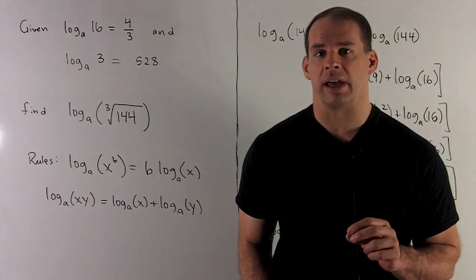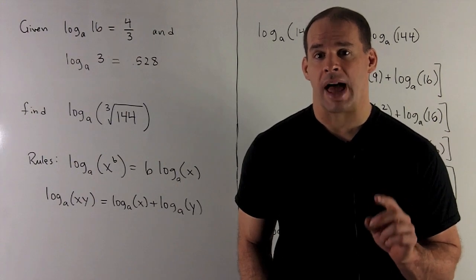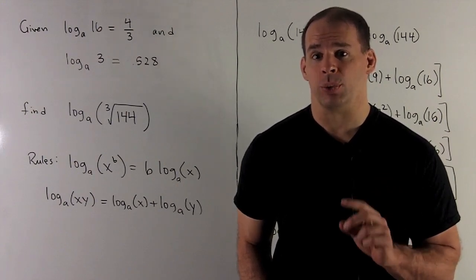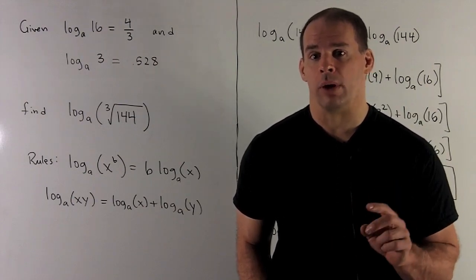Given that the log to the base a of 16 is 4 thirds, and that log to the base a of 3 is equal to 0.528, evaluate log to the base a of the cube root of 144.